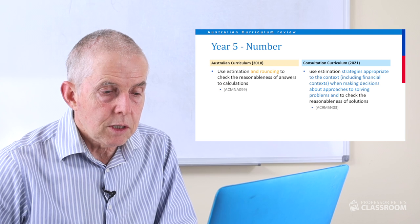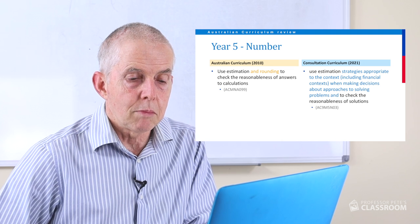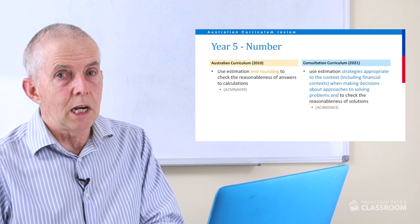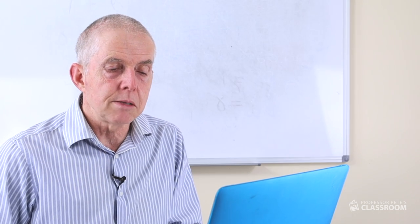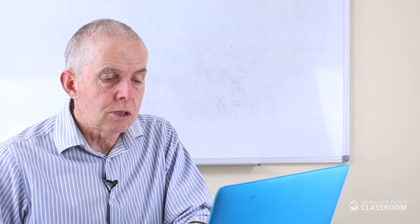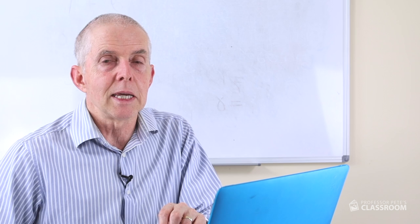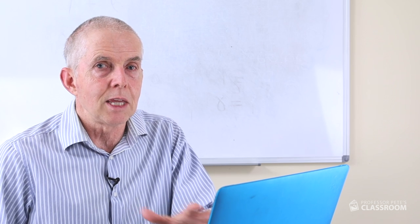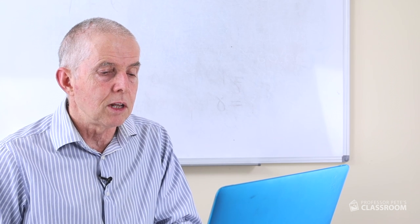The third one: use estimation strategies appropriate to the context, including financial contexts, when making decisions about approaches to solving problems and to check the reasonableness of solutions. This is really good — a very nuanced sort of content descriptor. It focuses on estimation strategies appropriate to the context, and when you are solving a problem, quite often you make a decision about how accurate your answer needs to be, and when you can estimate the answer quite safely and it won't affect the outcome. There's lots of very valuable content here.